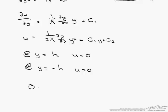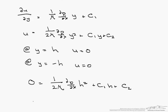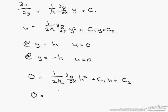So the first one, since u equals 0, 0 equals 1 over 2 mu dp/dx times h squared plus c1 times h plus c2. When we use the second boundary condition, same thing we get 0 equals 1 over 2 mu dp/dx.